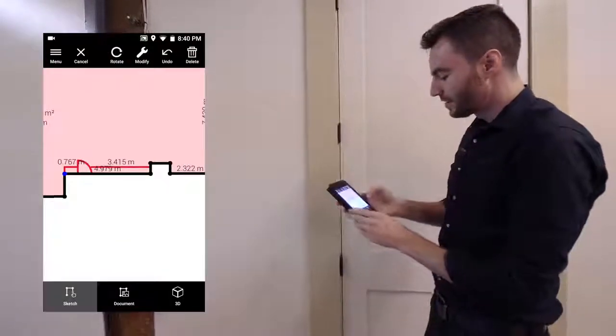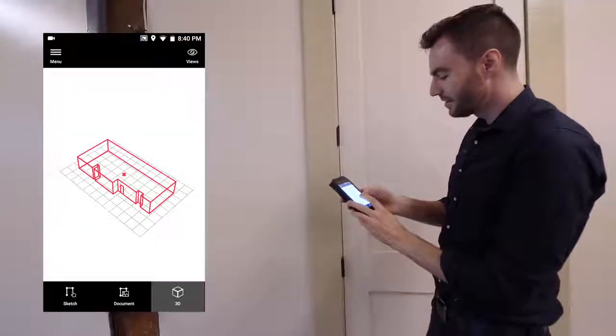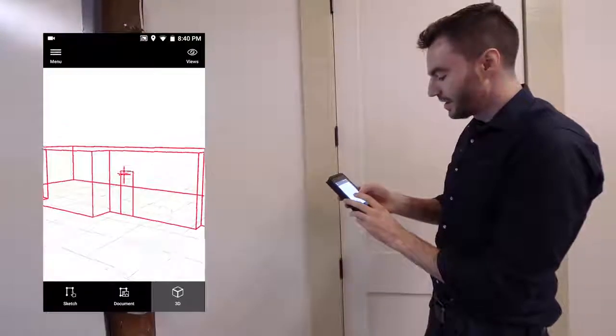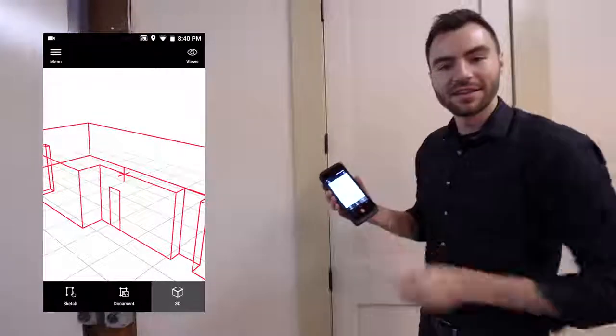Then I can measure out these dimensions to very accurately place the door. So now this door is correctly placed. I can go back into my 3D model and I can see that this door is in the right spot and the correct dimensions.